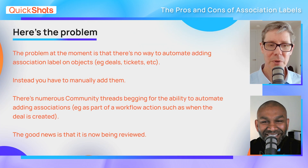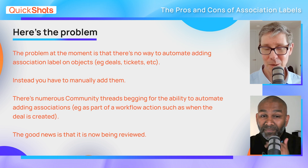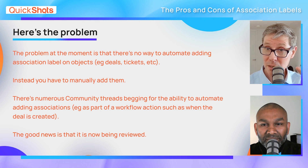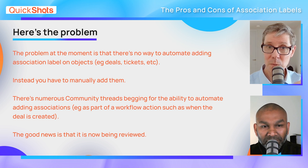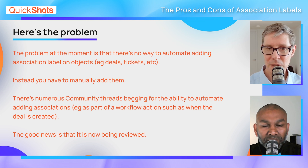So that's great - what's the problem? The problem is that you can't actually automatically set association labels on deals or associated objects; you have to do it manually. That means if you're disciplined enough to set association labels when deals are created, this will work in workflows. But what people are begging for - and if you look at the community threads, people are asking for this - is the ability within a workflow, when you create a deal from a contact workflow, to automatically set association labels at that point in time.